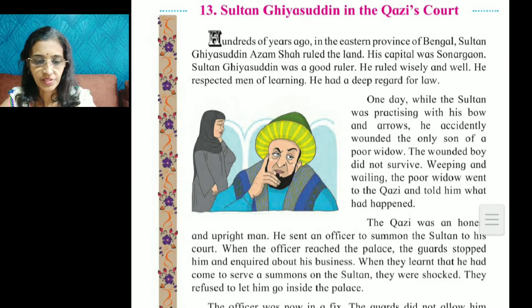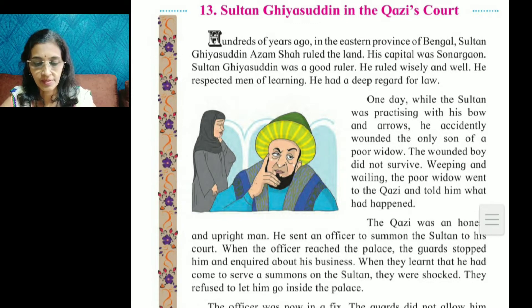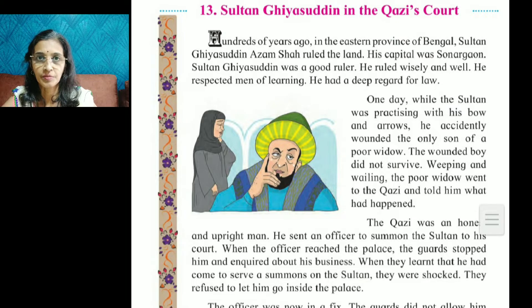The kazi was an honest and upright man. Upright means honest. He sent an officer to summon the Sultan to his court.